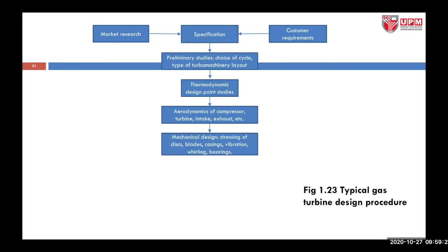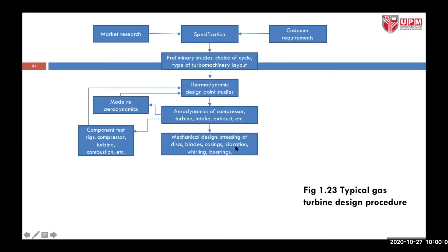Once you have all that, you proceed to the mechanical design — stressing the blades, the casing, vibration, whirling, and bearings. At the same time, you revisit the aerodynamics of the compressor. If it passes, you continue with mechanical design. If not, you go back and redo it, meaning the cycle returns to the thermodynamic design point studies.